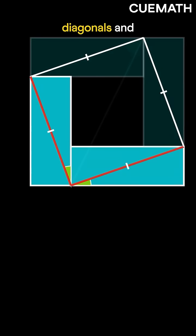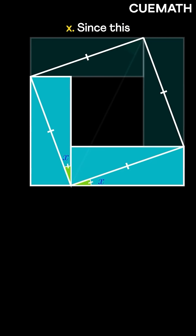Now, the angles formed by these diagonals and the longer sides of these rectangles must be equal. Let's call them x. Since this total is 90 degrees, this one must be 90 degrees minus x.